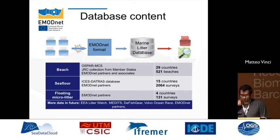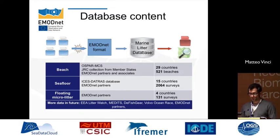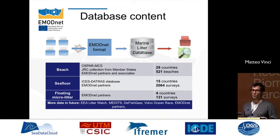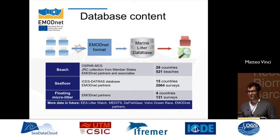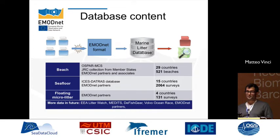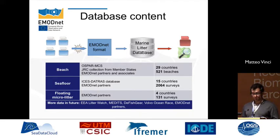We receive different formats of litter information from partners and associations. Our network of NODCs helps with formatting, and once we have the right format we populate our litter database and produce outputs. For beach litter: data from OSPAR and Marine Conservation Society, JRC collection from member states, and EMODnet partners — totalling 29 countries and 521 beaches. For sea floor: ISIS-Fish database and EMODnet partners — 15 countries and 2,064 surveys. For floating micro litter: data from 4 countries with 131 surveys.